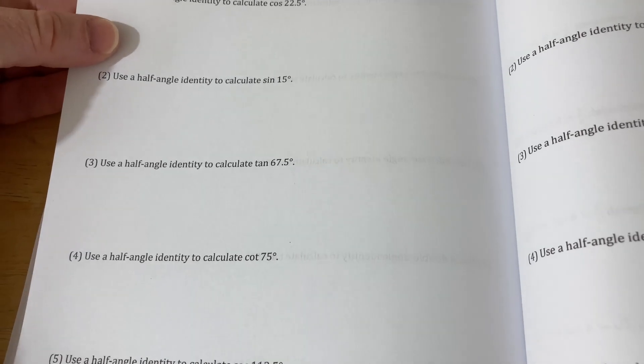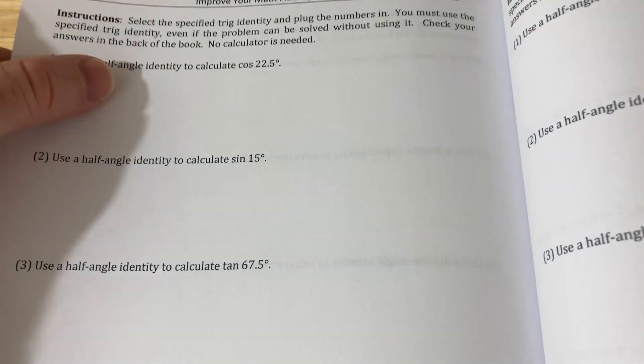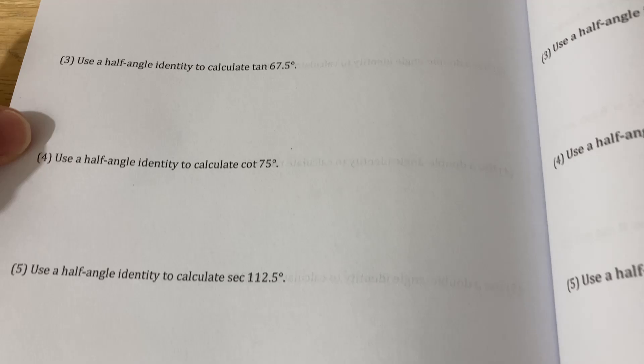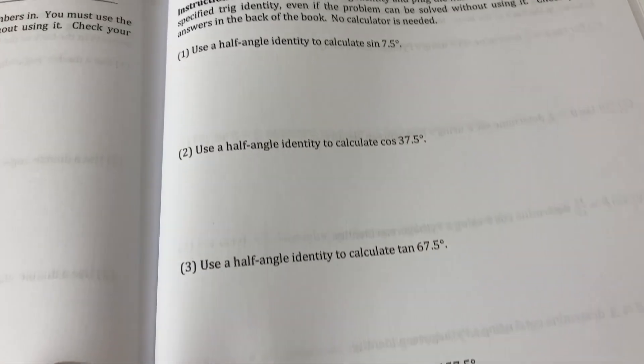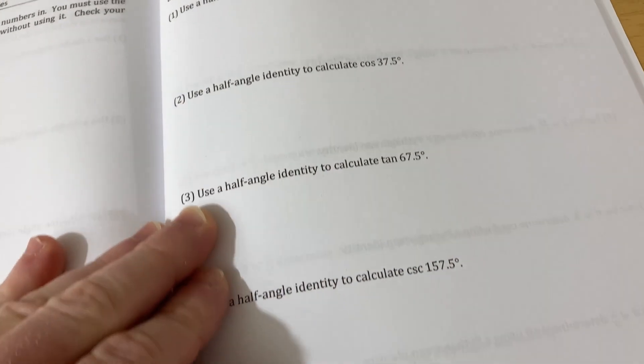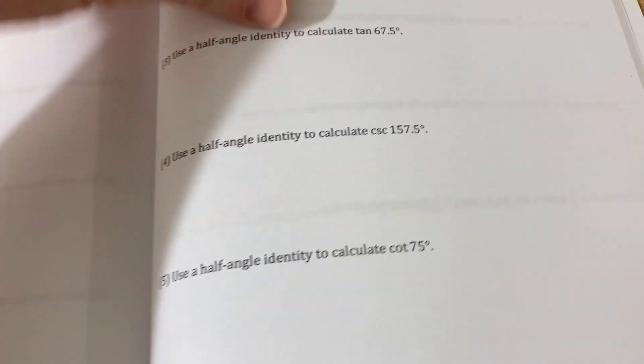Then you have half angle identities. So you have an example with cosine, sine, tangent, cosecant, cotangent. And does it again here. Sine, cosine, tangent, cosecant, cotangent. Very nice.